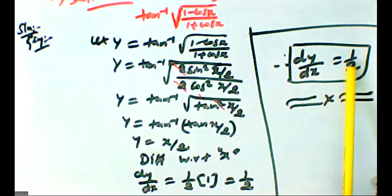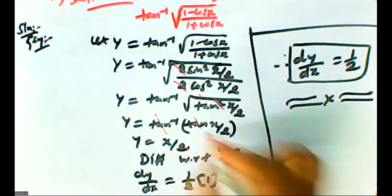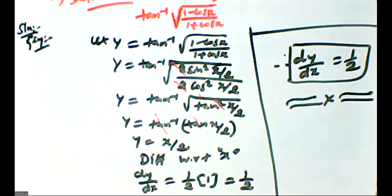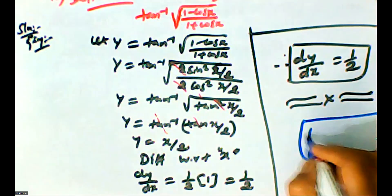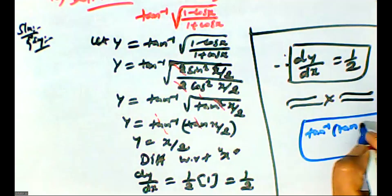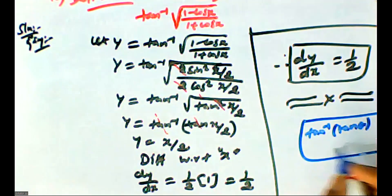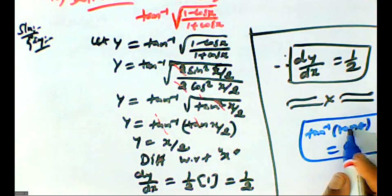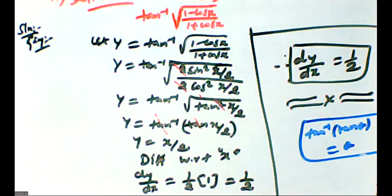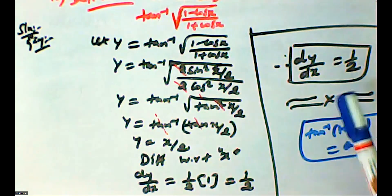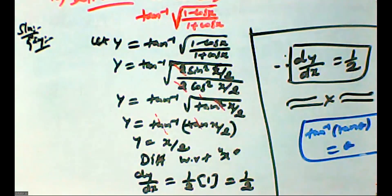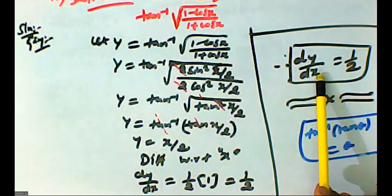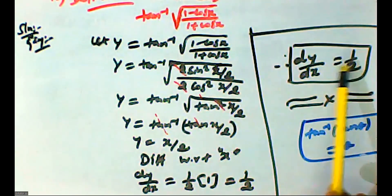Therefore dy by dx is equal to 1 by 2. This uses the identity tan inverse of tan(theta) equals theta. Since x/2 is a constant multiple of x, the derivative is 1 by 2.